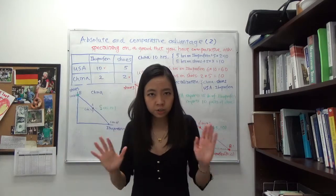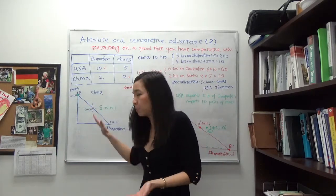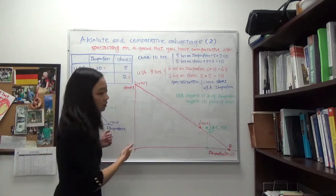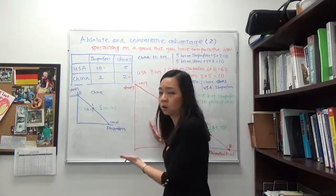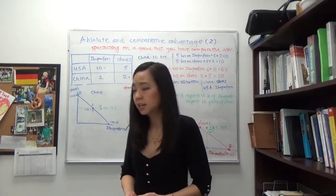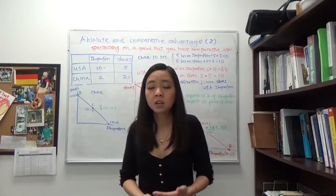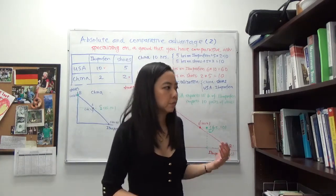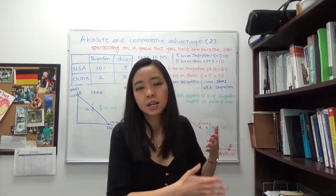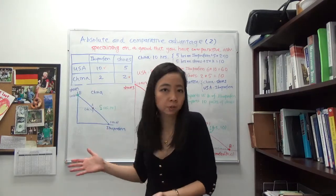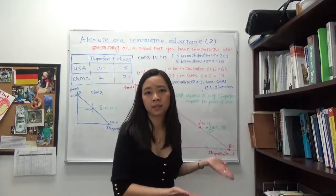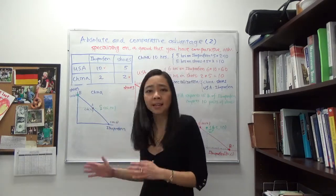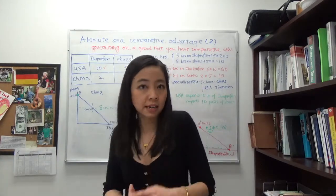Without trade, you consume on the production possibility curve. But with trade, both countries can consume outside the production possibility curve — both countries gain from trade. This is why countries like to trade: even though China has an absolute disadvantage in both products, it can still gain by focusing on the good it has a comparative advantage in. This is also why developed countries like Germany, France, or the United States trade with less developed countries like India and China — even though developed countries have an absolute advantage in aircraft, chemicals, textiles, and clothing, less developed countries typically have a comparative advantage in textiles and shoes.